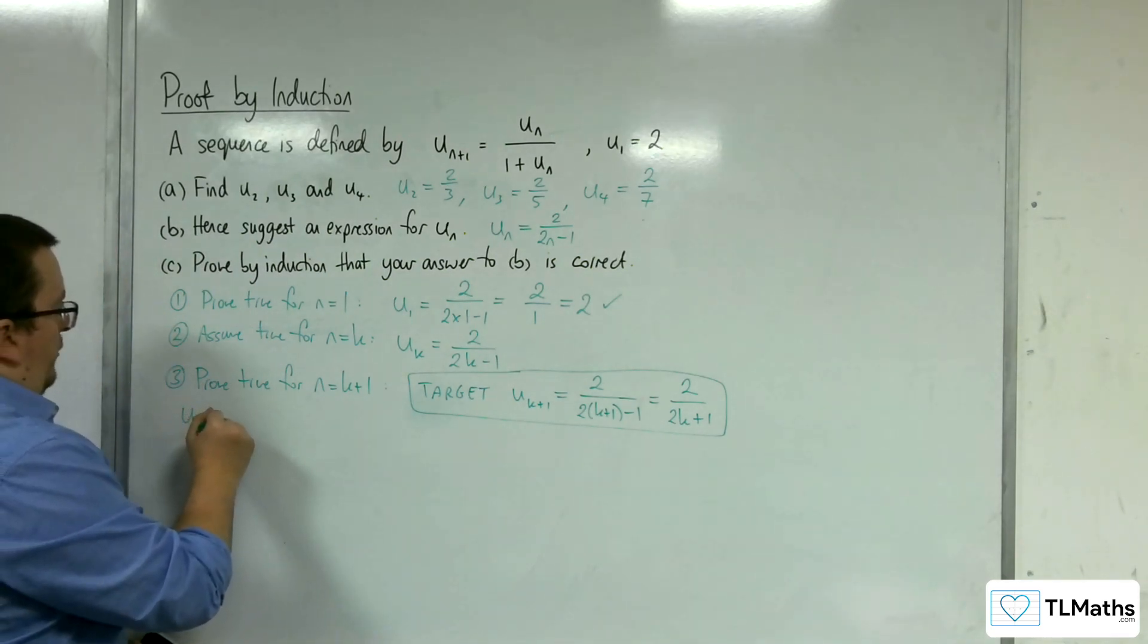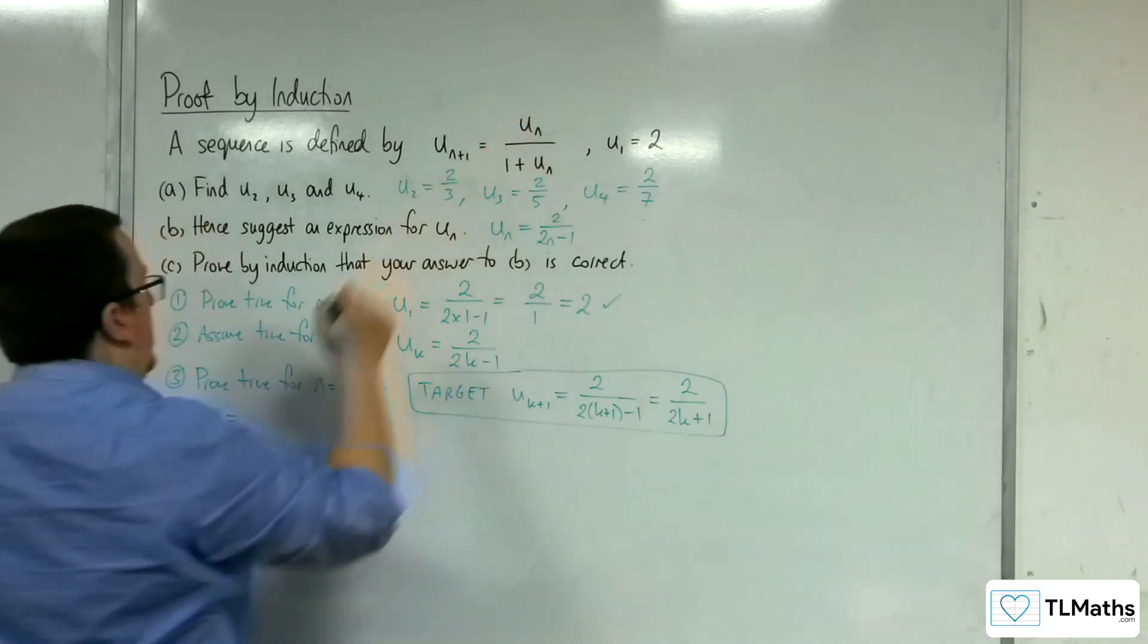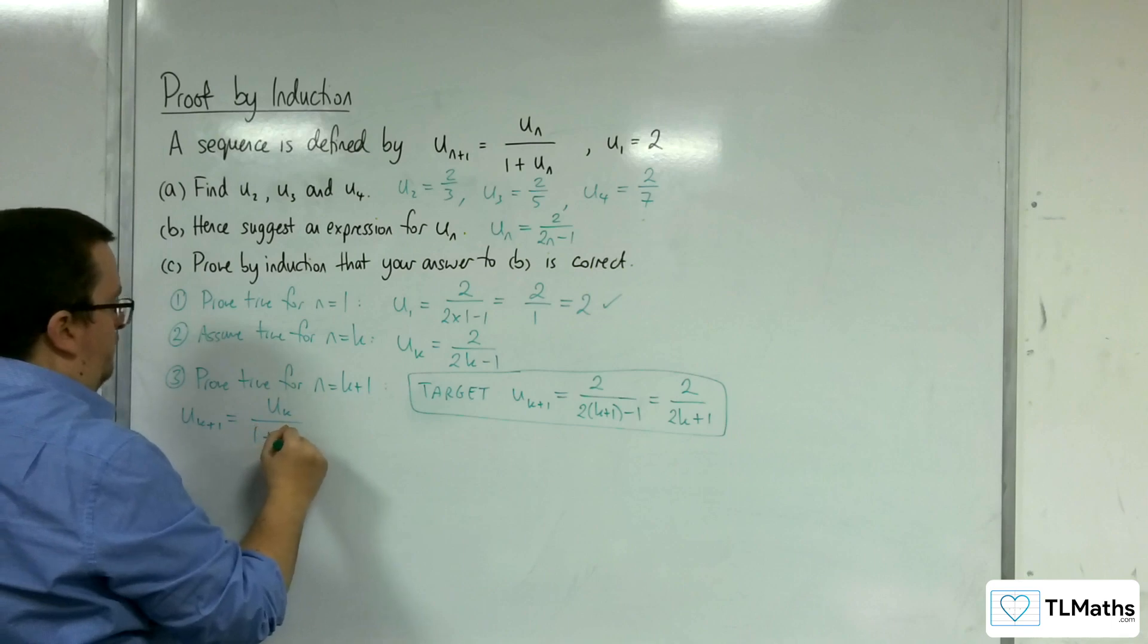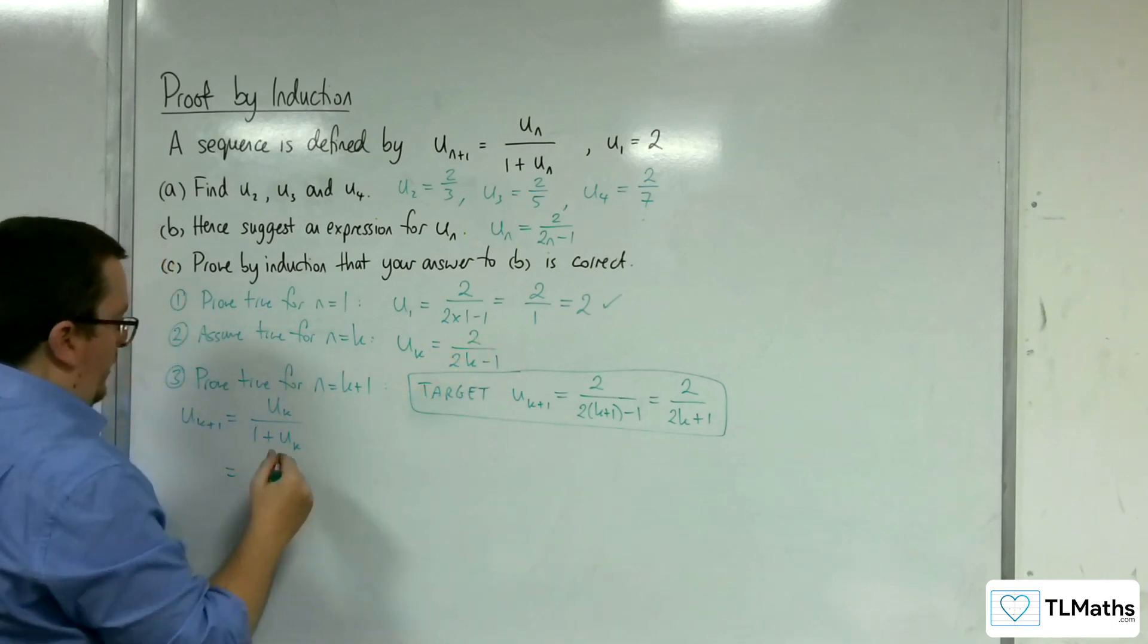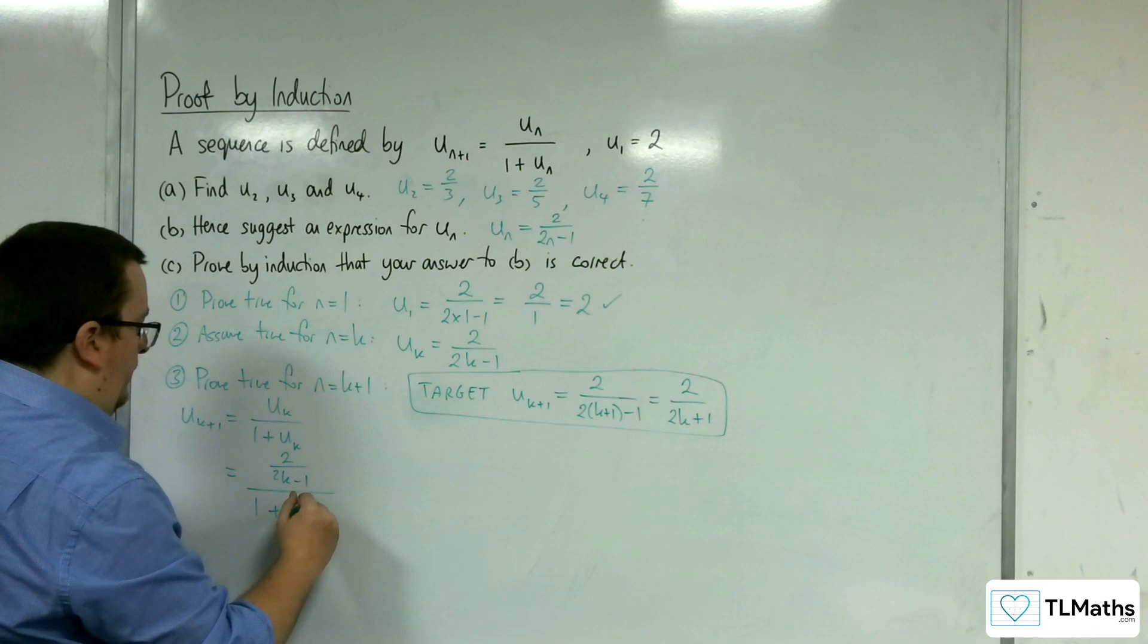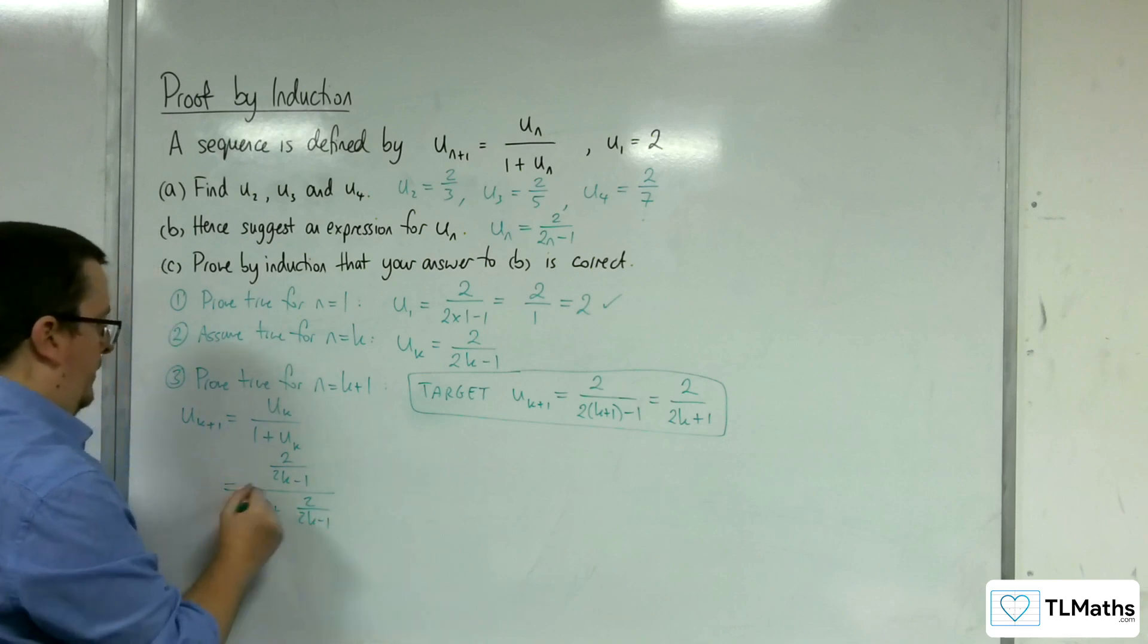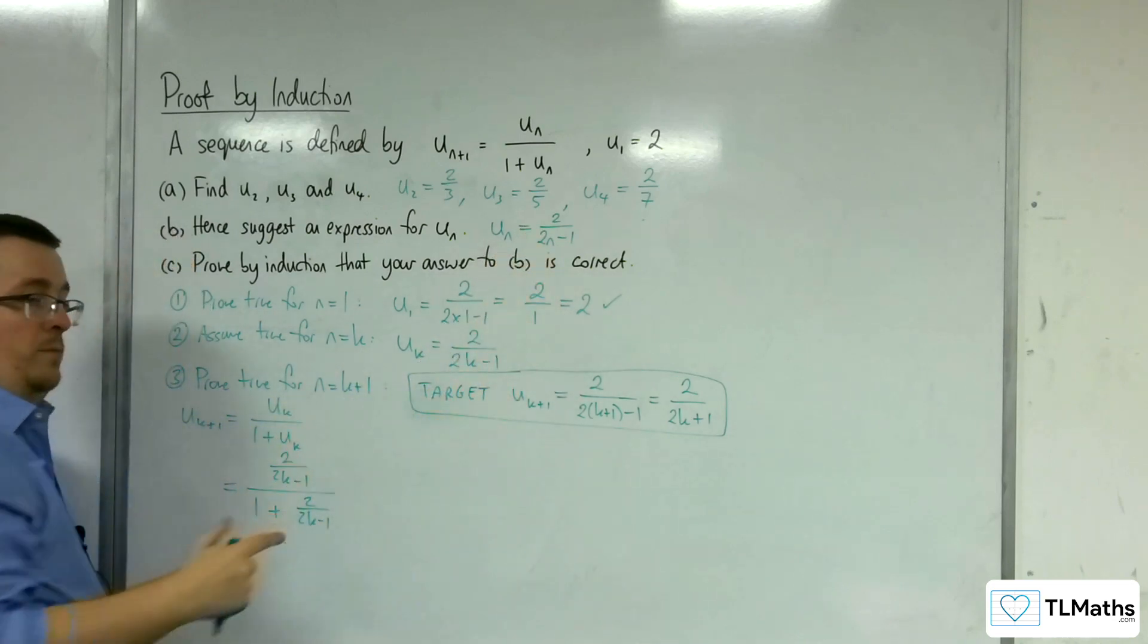So u(k+1) is equal to u(k) over 1 plus u(k). Now, the u(k), remember, is this 2 over 2k minus 1. So we've got 2 over 2k minus 1 over 1 plus 2 over 2k minus 1. It's substituting the u(k) I had here into my formula.